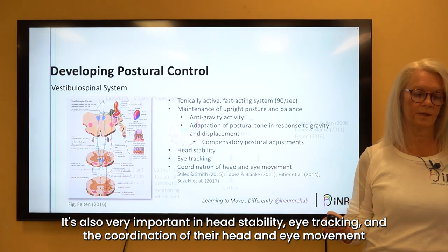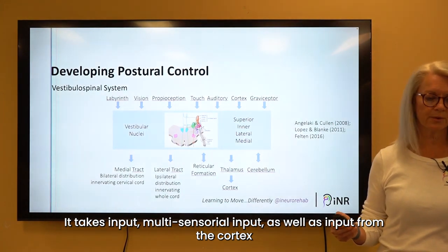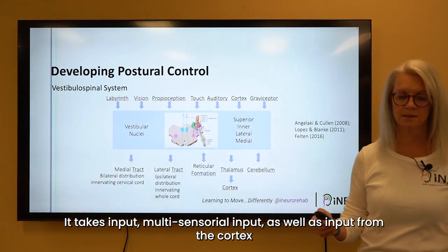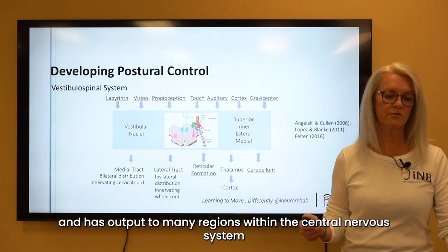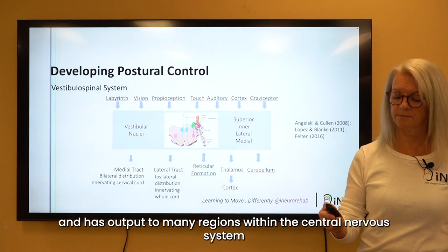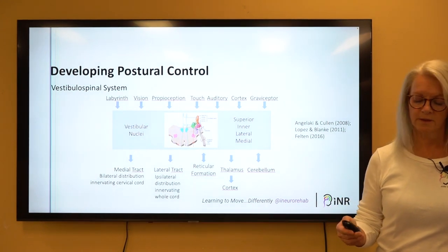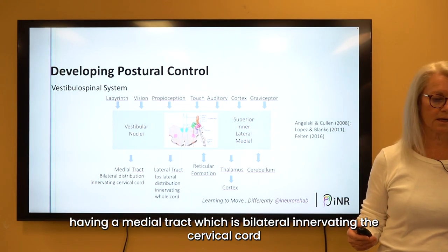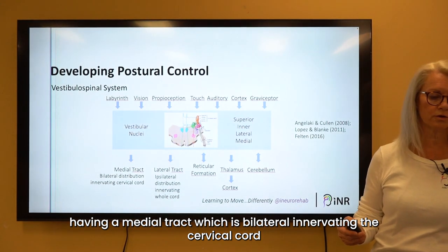It takes multi-sensory input as well as input from the cortex, and has output to many regions within the central nervous system. It has a medial tract which is bilateral, innervating the cervical cord, and a lateral tract which is ipsilateral, innervating the whole of the spinal cord.